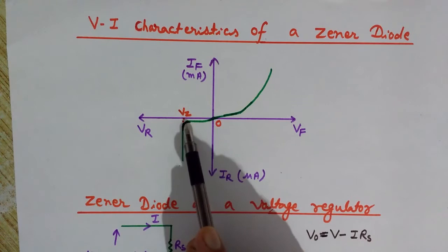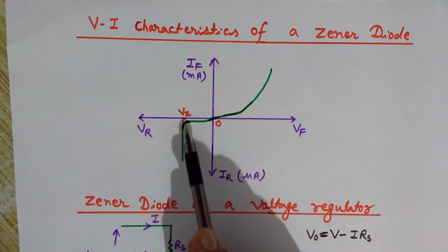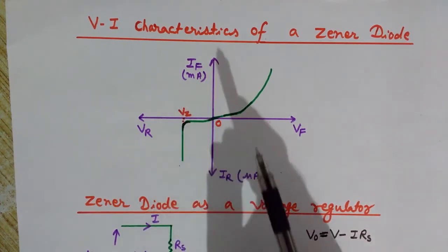It is flowing infinite amount of current. Although the current is increasing, the voltage has stopped at Vz, so we can use the Zener diode as a voltage regulator.